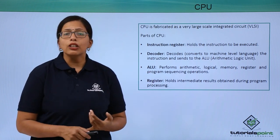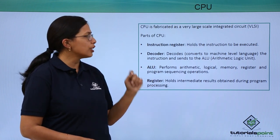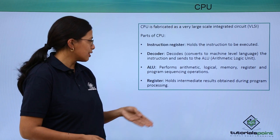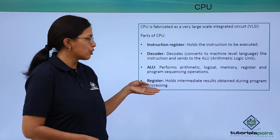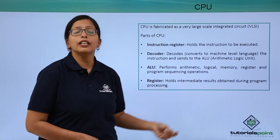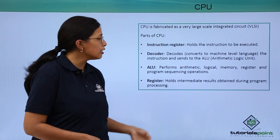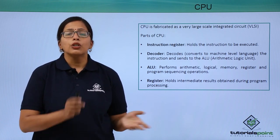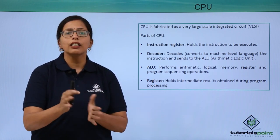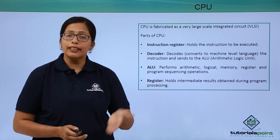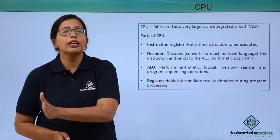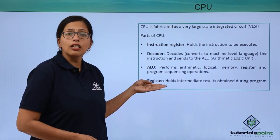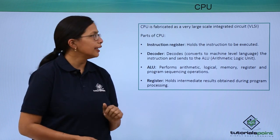The ALU, or the arithmetic logic unit, will perform all the arithmetic operations and the logical comparisons. Finally, the register holds the intermediate results obtained during program processing. For example, if the instruction is 2 plus 3 plus 5, then 2 plus 3 equals 5 is stored in the register, and then 5 plus 5 is computed to obtain the answer of 10.